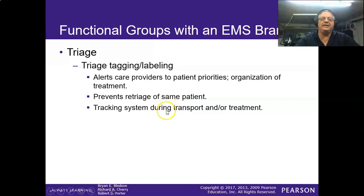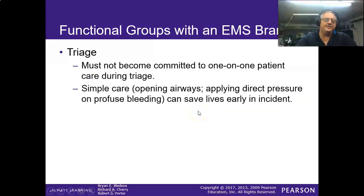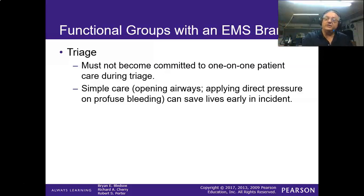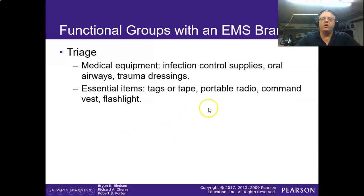The reason we do tagging and labeling is so that we don't retriage the same patient five or six times. They use colored survey tape — it's very easy to use and identifies your priorities. Once you get everybody tagged, triage is also responsible for getting patients to the treatment area — they become litter bearers. Once everyone is triaged, you start moving patients: all red tags first, unless you can't get to the reds because yellows and greens are in front of them. We try to get reds out first, yellows second, greens third.